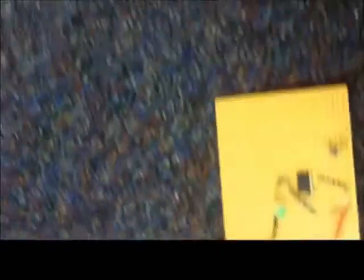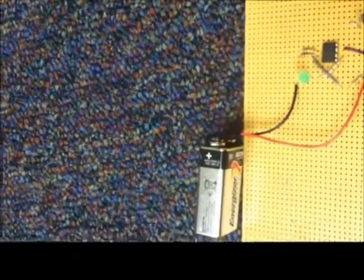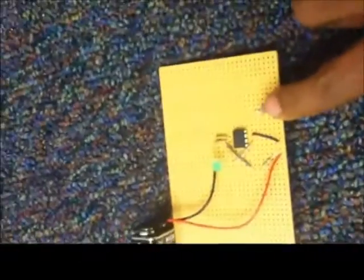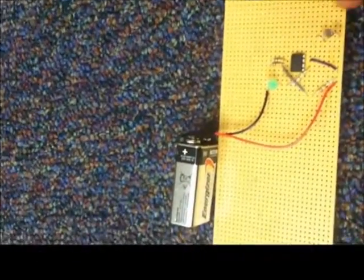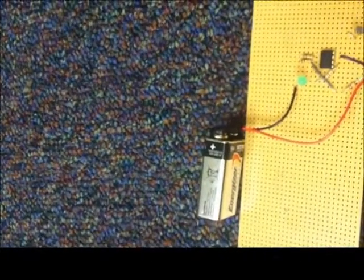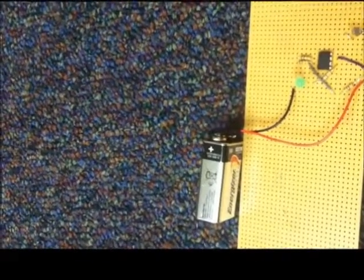What this project does is it detects light and darkness with the photo resistor right here, using IC741 and four different resistors.